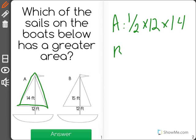And the B sail, the base is 12 feet, and the height is 15 feet.